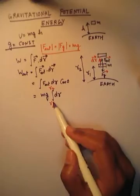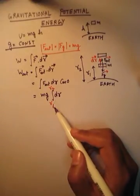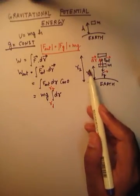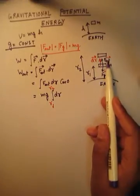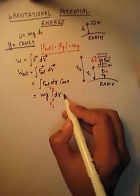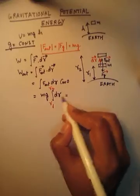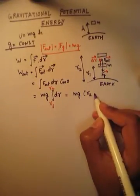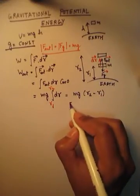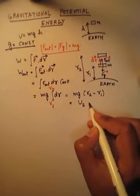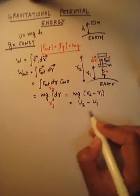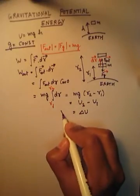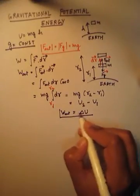I am purposely using r1 and r2 so we are not confused with what is initial and final. These r1 and r2 are not vectors — they are just lengths, so we are moving from one length to the other due to this external force. When we integrate dr we get r, so it will be mg times (r2 minus r1). This is the potential energy change, delta u. So the work done by the external force is equal to delta u.